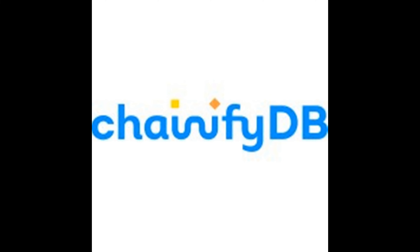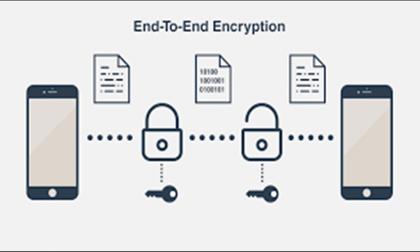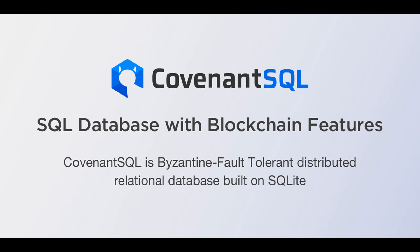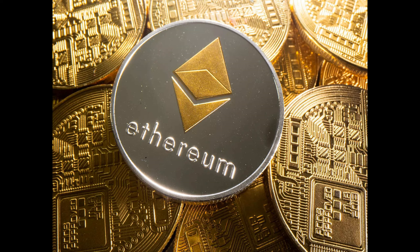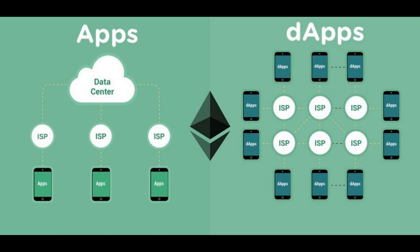The next database is ChainifyDB. The uniqueness of this database is end-to-end encryption — communication between the plug-in database and the ChainifyDB network is highly encrypted, which is a very good point. After that is CovenantSQL. CovenantSQL provides an infrastructure on top of which to build decentralized apps, just like Ethereum — the second largest cryptocurrency next to Bitcoin, whose blockchain is highly used in building decentralized apps. CovenantSQL can be used in asset management and integrated into IoT solutions as well.